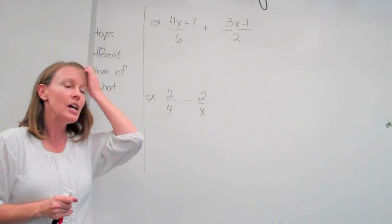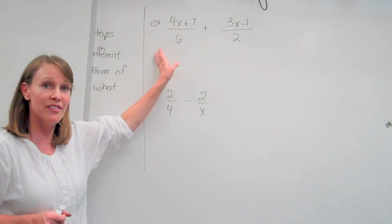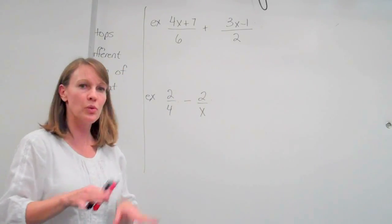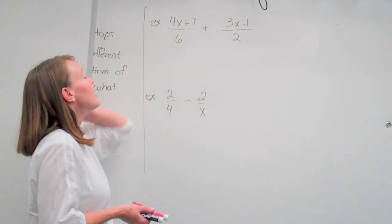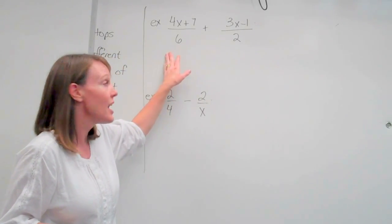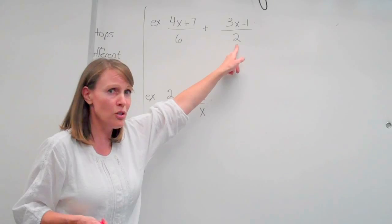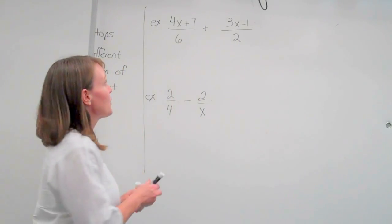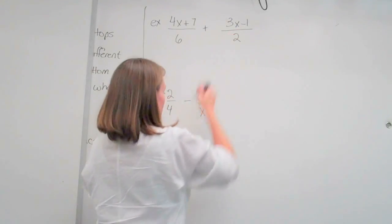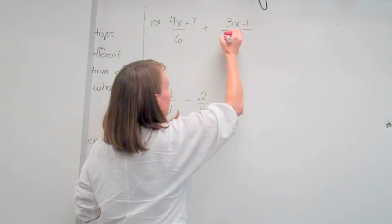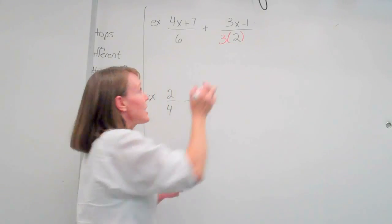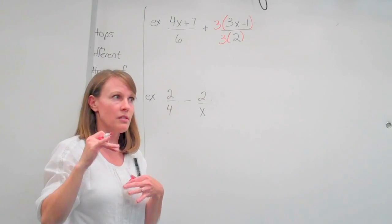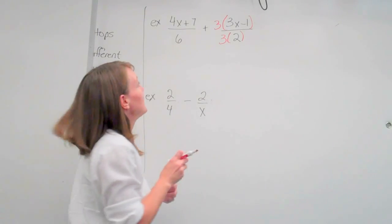All right, here's our examples. So we're going to start with (4x+7)/6 and (3x-1)/2. We look at the bottoms, we need to have common denominators. The common denominator is not 2, because we cannot divide to get a common denominator, only multiply. The common denominator is 6, that means we need to multiply this side by 3, and to balance it, we also need to multiply the top by 3.